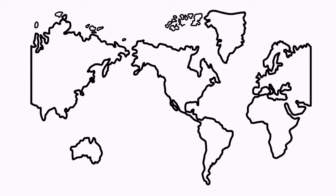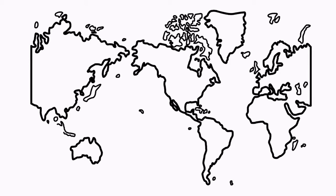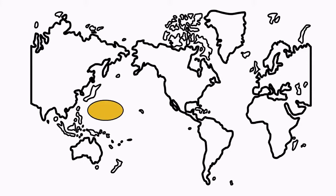The manganese content is a bit lower and the iron content a bit higher than in manganese nodules. Cobalt crusts are found worldwide on the ocean floor, but the highest concentrations of crusts with economic relevance are found in the western Pacific, also called the prime crust zone. Many are found in areas of volcanic activity and around islands.